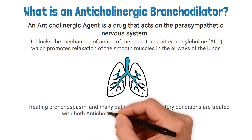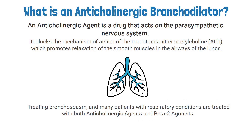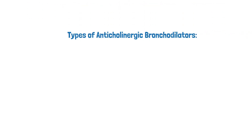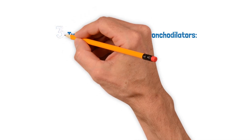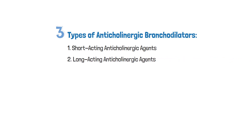This is why it's effective in treating bronchospasm, and many patients with respiratory conditions are treated with both anticholinergic agents and beta-2 agonists. There are three primary types of anticholinergic bronchodilators: short-acting, long-acting, and ultra-long-acting.